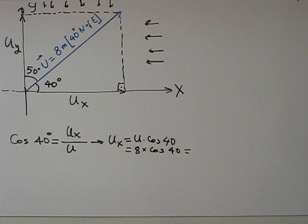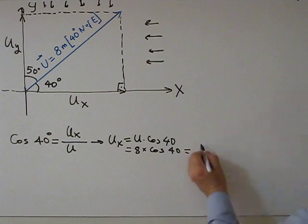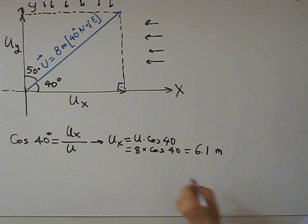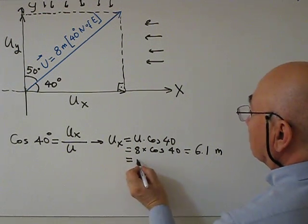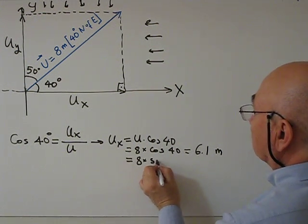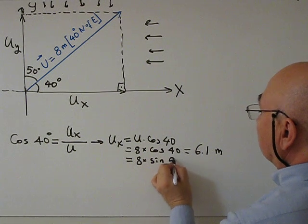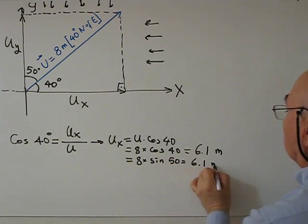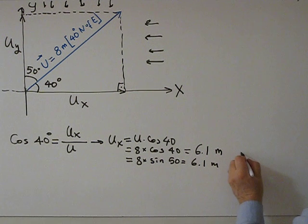Or we can use 8 times sine 50, we get 6.1 meters. But I prefer this method, it is more systematic.